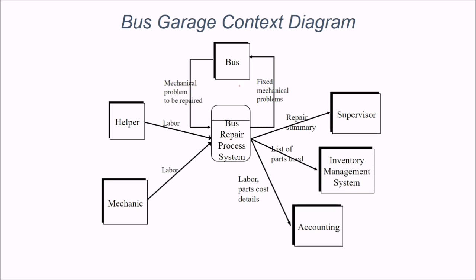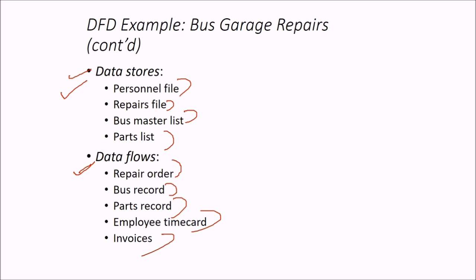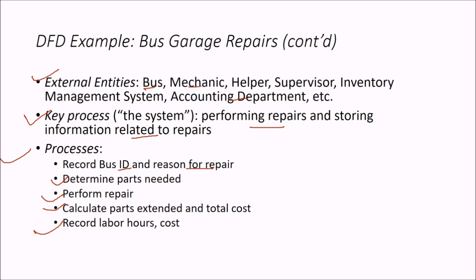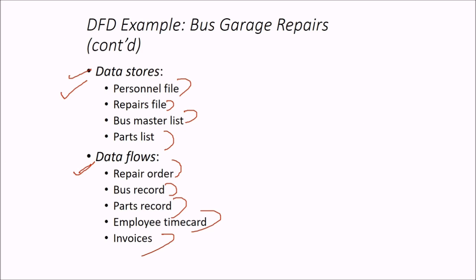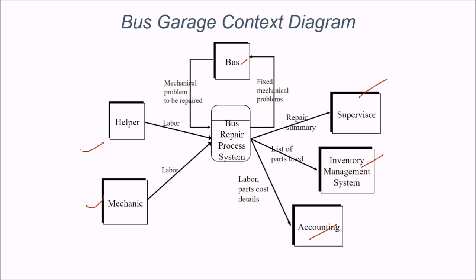Let me make this directly — the bus garage context diagram. This is the bus repair system. We have helper, mechanic, bus, supervisor, inventory management system, and accounting as external entities. This is how they interact as per the external entities, key process area processes, and the data stores and data flows — this is what you can make from the problem statement. These are the two examples taken in different scenarios, and in different ways we have tried to develop the DFD. Thank you so much. Take care.